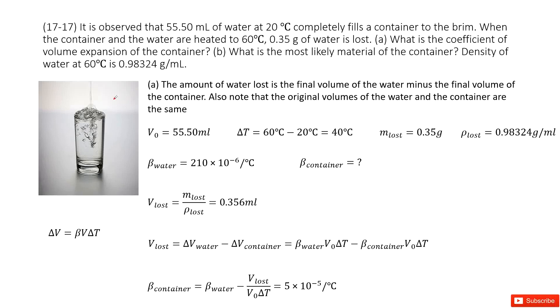Here we have water in a container with initial volume V0. The temperature increased from 20°C to 60°C, an increase of 40°C. This makes the water leak. The water lost mass and density are given.